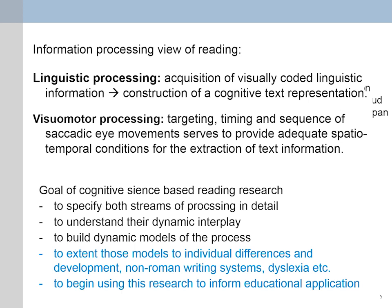In a cognitive science-based reading research approach, we have a number of basic questions we are trying to address. We need to specify both streams of processing in detail, understand the intricate mechanics and dynamic interplay, and build dynamic mathematical models—algorithms that simulate the process of reading as it happens in real time. We are now extending those ideas toward capturing individual differences and development, looking into non-Roman writing systems, dyslexia, and various applications including speed reading. One major arena of this research is now application in educational settings.